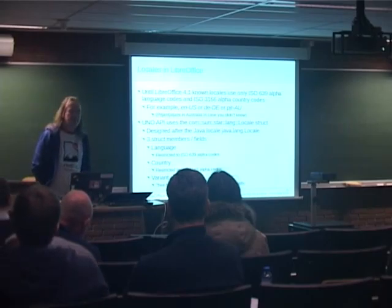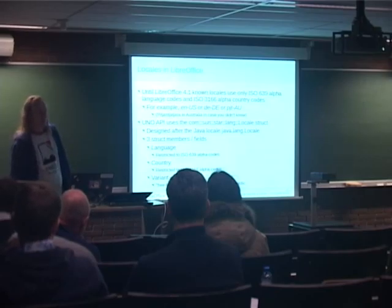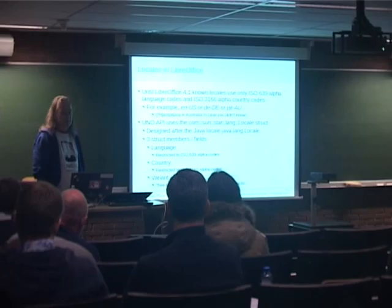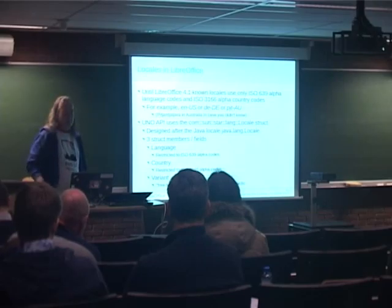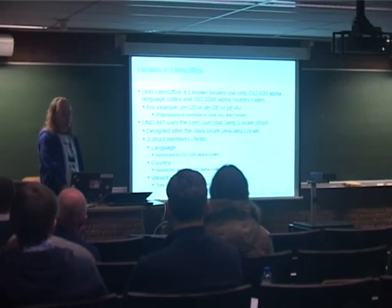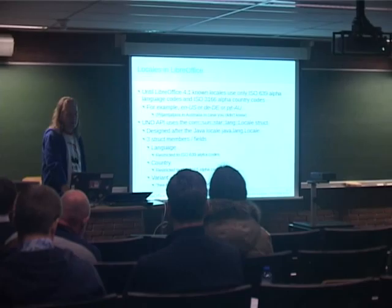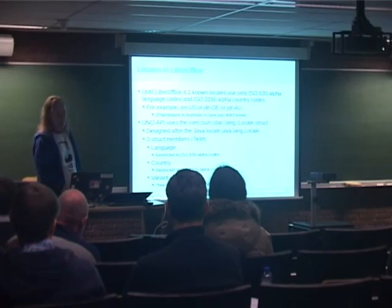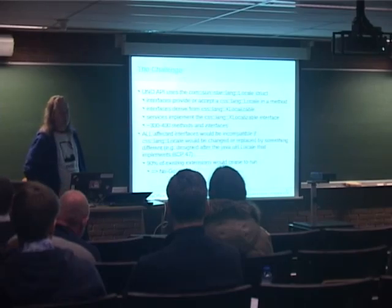Then we have the locales and LibreOffice, that is LibreOffice 4.1, where only the ISO 639 alpha language codes and the 3166 country codes exist - the usual EN or ES or DE-DE. Then there is the UNO API that uses the com.sun.star.lang.Locale struct that was designed after the Java Locale, and it has three fields: language, country, and variant. These three fields are restricted to language ISO codes, country ISO codes, and the variant field is a more or less free form field - it's always platform and application specific, so you actually don't know anything about what you could get there. We didn't support that at all, the variant fields. We have only the language and country fields.